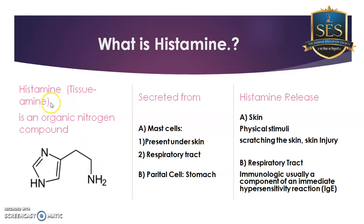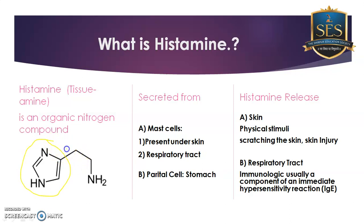Now briefly, the chemistry of histamine: it contains an imidazole ring, and this imidazole ring is attached with an ethylamine side chain. So histamine has two parts — one is the imidazole ring and second is the ethylamine side chain. Now the question arises: from which cells is it released in our body?